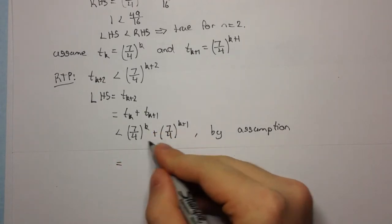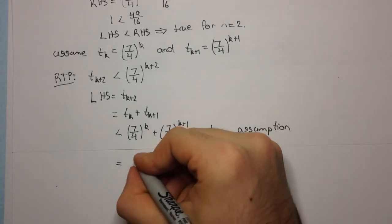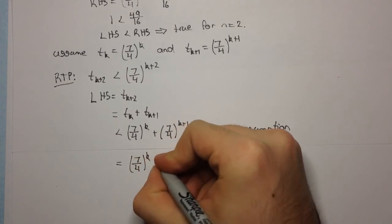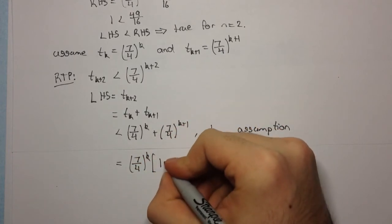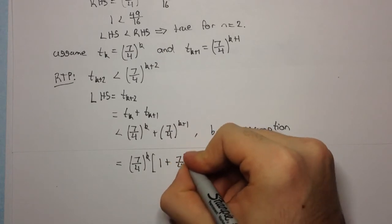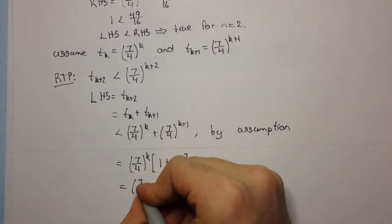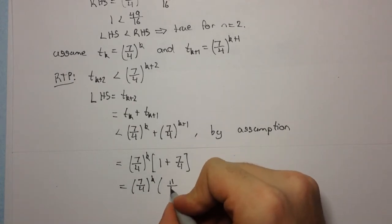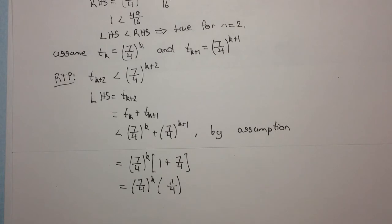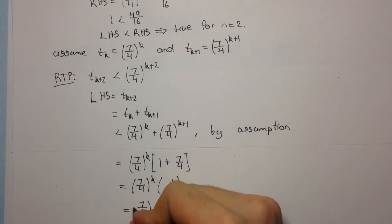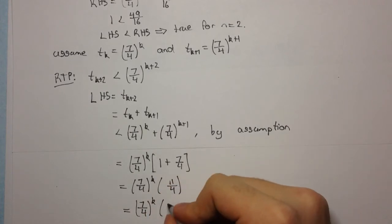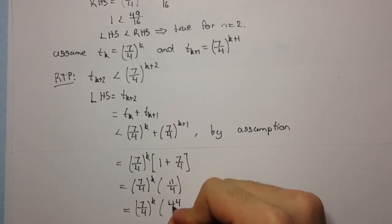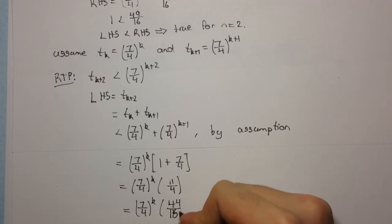Now we can factor out (7/4)^k from both of these terms, and we're left with (7/4)^k times (1 + 7/4). Making a common denominator of 4, that gives us (7/4)^k times (11/4). We can rewrite 11/4 by multiplying top and bottom by 4, giving us 44/16.